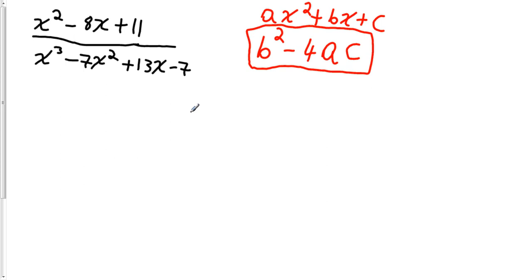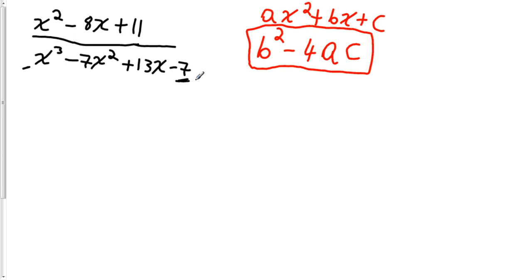Let's go ahead and do what we've done before. First, we check to see if it's a proper fraction — and indeed this is. Next, we're going to factor the denominator. This is a cubic polynomial with four terms. I'd first try to factor by grouping, but that doesn't work. So I apply synthetic division with the factor theorem and remainder theorem to find factors. I'm looking at factors of the constant — 1 and 7 — over the leading coefficient, which is 1. So my four possible rational zeros are positive 1, negative 1, positive 7, and negative 7.